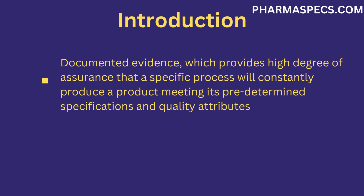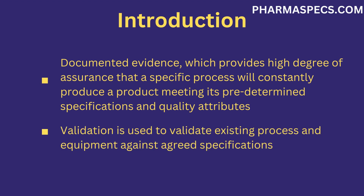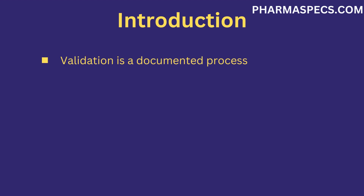Validation is defined as a documented evidence which provides a high degree of assurance that a specific process will constantly produce a product meeting its pre-determined specifications and quality attributes. It means to provide evidence that the result of a product or process will be according to the specifications and requirements agreed before the buying process. Each process and stage of validation must be documented; without documentation, validation results are not acceptable and are not considered complete.